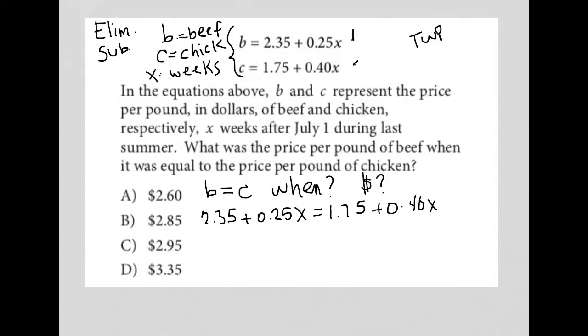When I simplify that further, I can subtract 1.75 from both sides and subtract 0.25x from both sides. Altogether I get 0.60 equals 0.15x.